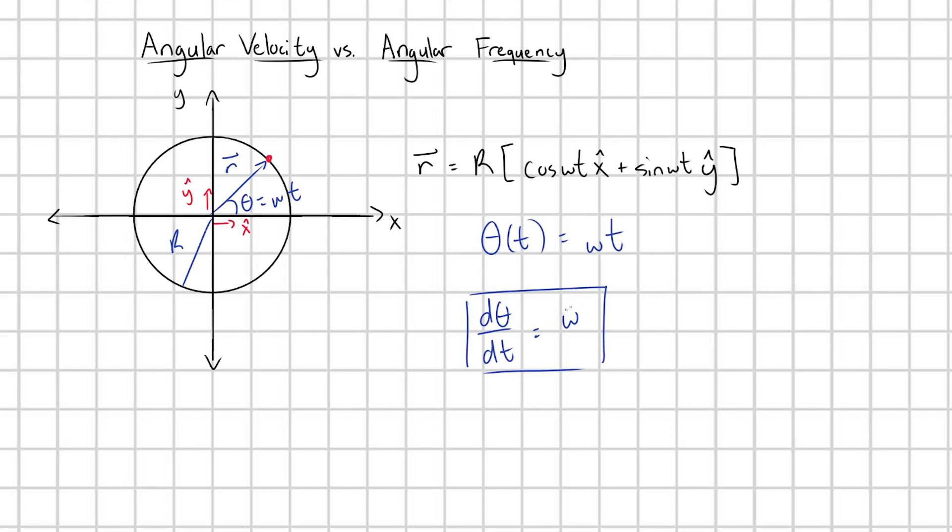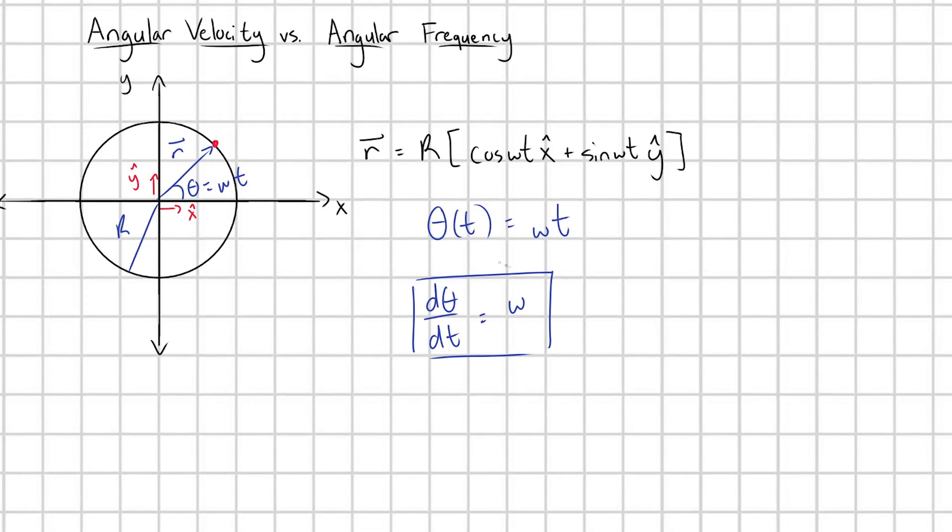By the way, even if this omega was not a constant, and we had some changing angular velocity, like we had an angular acceleration, we could still use this very general definition d theta dt to define angular velocity at some moment in time. But when we have a constant angular velocity, like how I parameterized in this situation, then I can also write this as some delta theta and some delta t.